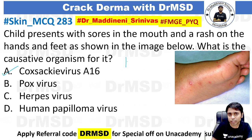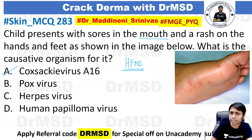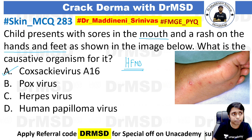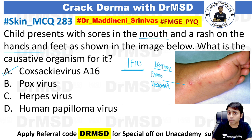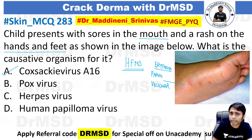The diagnosis in this case is hand, foot, and mouth disease, because there are sores — that is, ulcers and erosions — in the mouth, and a rash over the hands and feet is mentioned in the question. If you observe the image carefully, it shows a papulovesicular lesion surrounded by erythema. This description of palms and soles showing papulovesicular lesions along with oral erosions or ulcers points towards hand, foot, and mouth disease, which is basically an enteroviral infection.